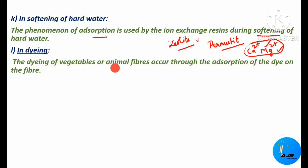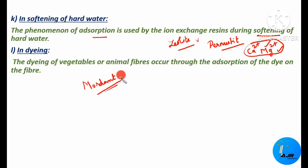The next application is in dyeing. The dyeing of vegetable or animal fibers occurs through adsorption of the dye on the fiber. When a mordant is used in the dyeing process, the dye gets absorbed by the mordant and then indirectly gets attached to the mordanted fiber. I hope you have understood what I have taught today. Let me meet you with another important topic in my next session. Until then, this is Dr. Anita Raj, your chemistry mentor, signing off. Thanks for watching.